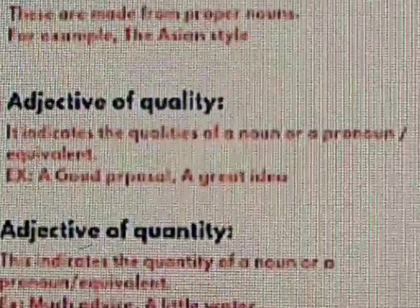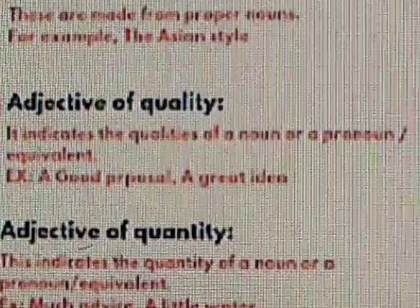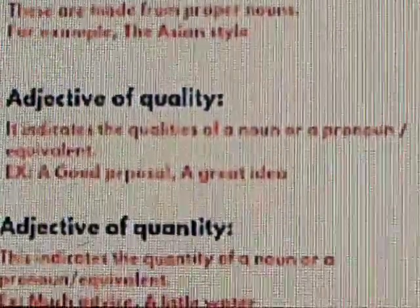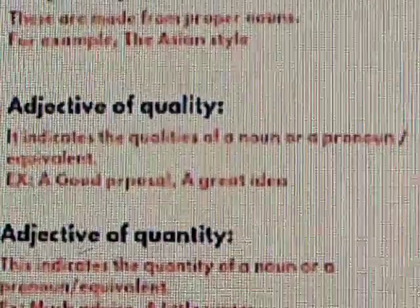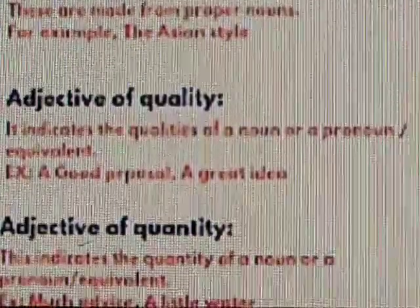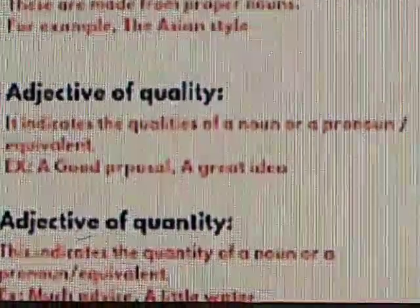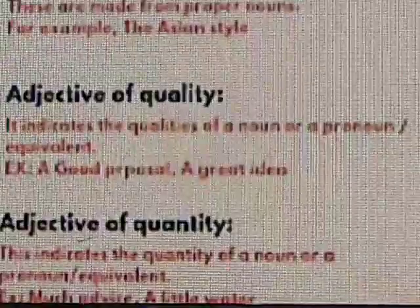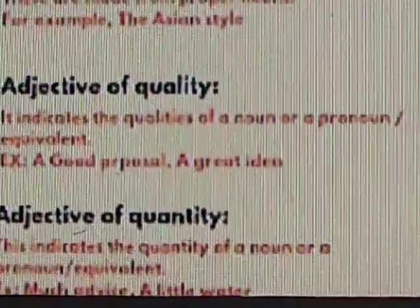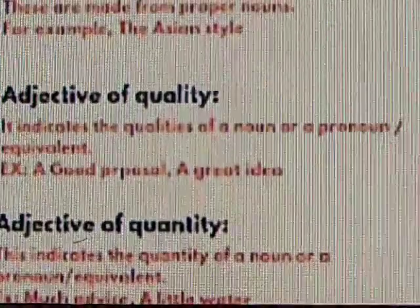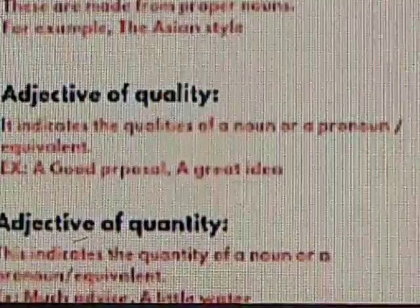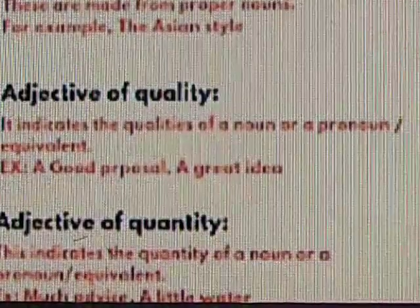The second type is adjective of quality. If you have to describe a noun by its quality — for example, a person is good and kind — you say he is a good person or she is a kind woman. Words which describe the quality of a noun are called adjectives of quality. For example: he is an honest man; that is a great idea.